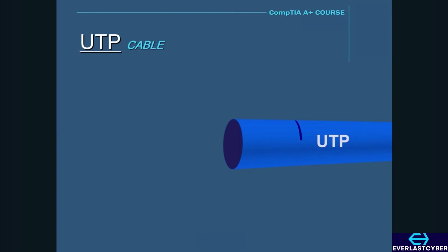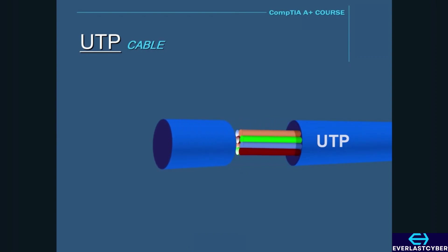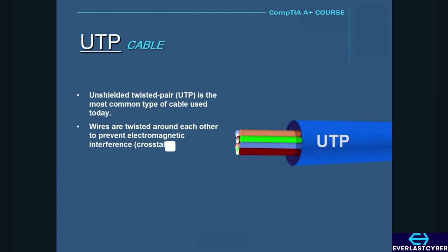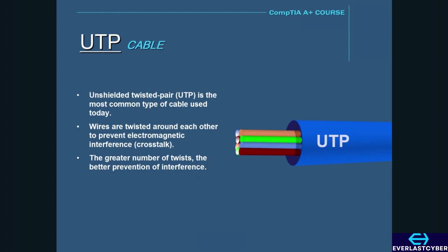Unshielded twisted pair is by far the most common type of cable used today. It consists of four pairs of unshielded wires twisted around each other. The wires are twisted to prevent electromagnetic interference or crosstalk, and this type of cabling is mainly used on local area networks.